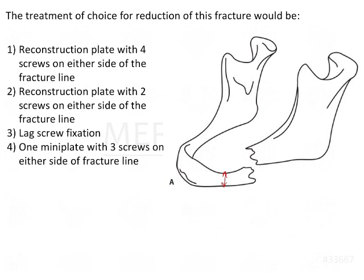Let's go through the four options and try to eliminate them to understand the answer better. Option one: reconstruction plate with four screws on either side of the fracture line. Option two: reconstruction plate with two screws on either side. Option three: lag screw fixation. Option four: one mini plate with three screws on either side of the fracture line.